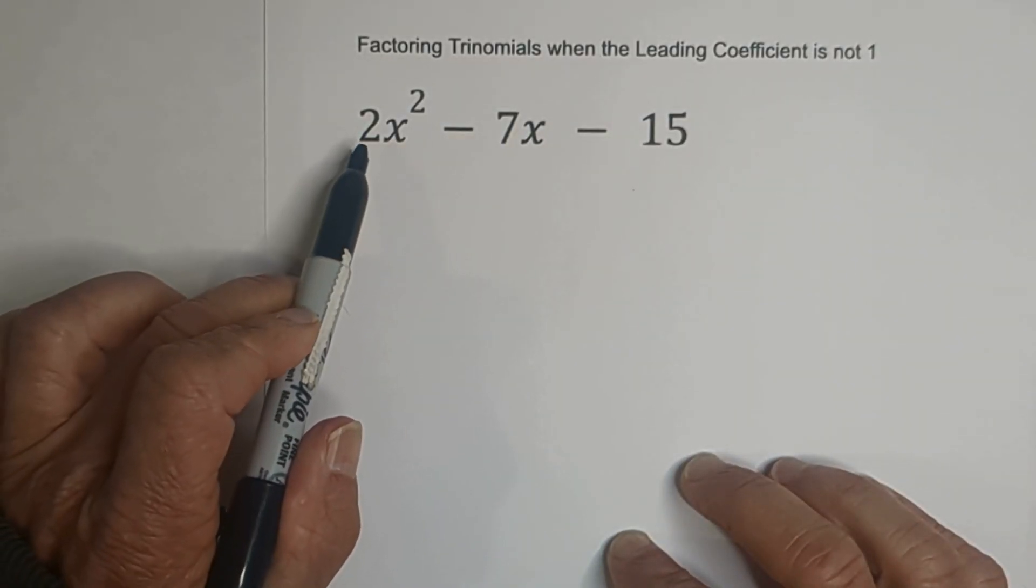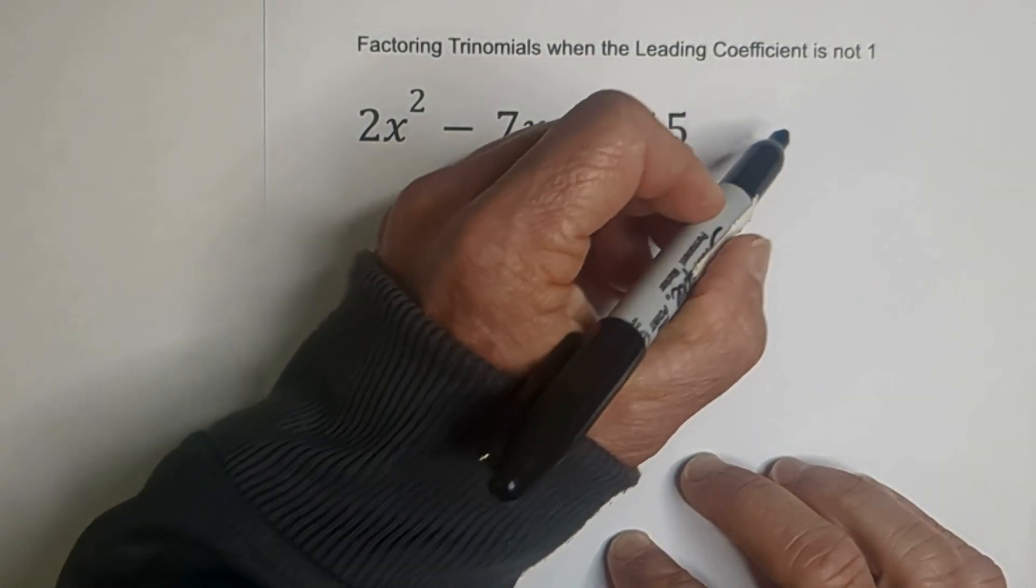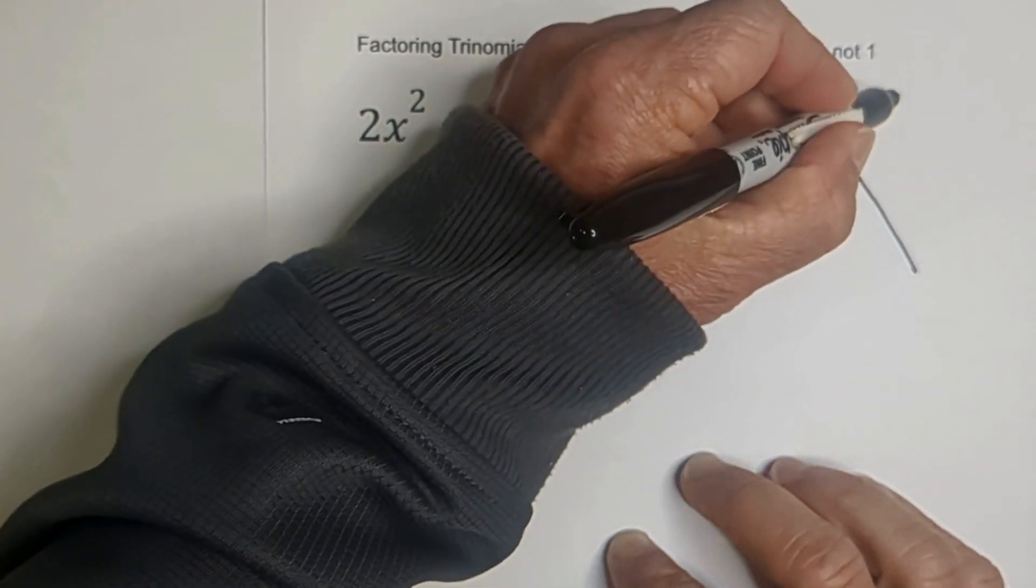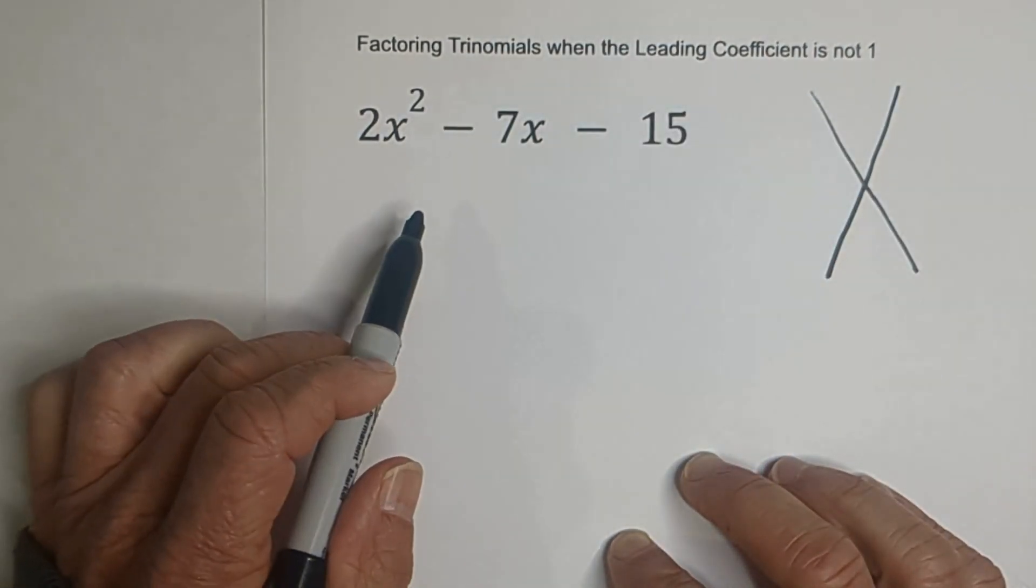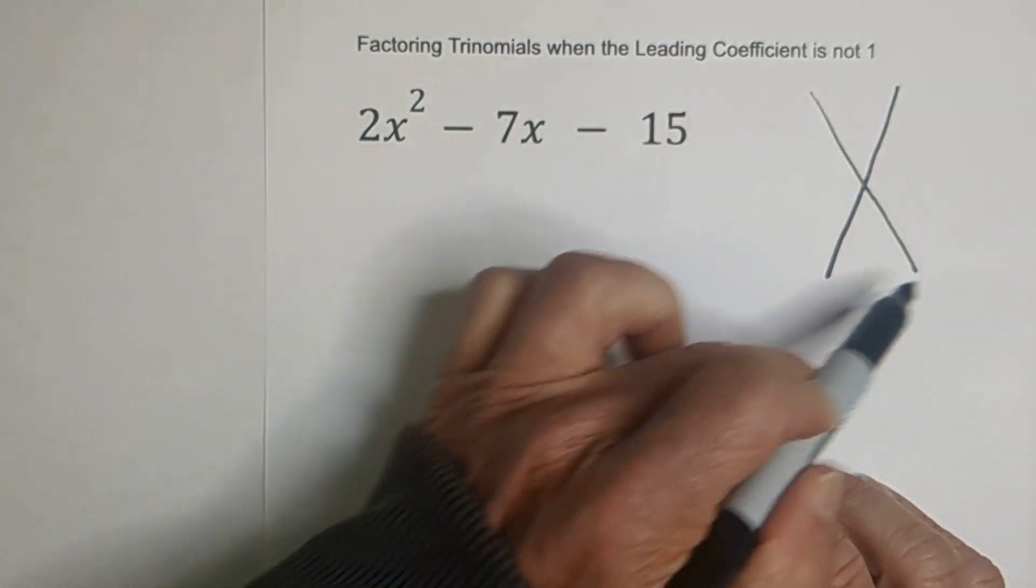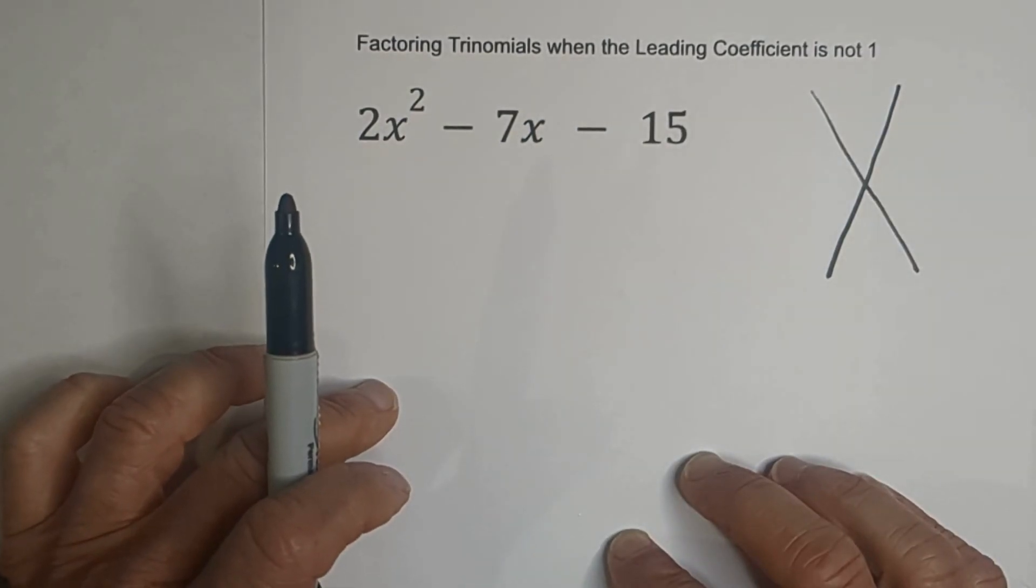And what this means is if you'll notice, this is a 2. So first thing, let's just write an X and I'll explain. This just kind of helps organize your thinking a little bit.